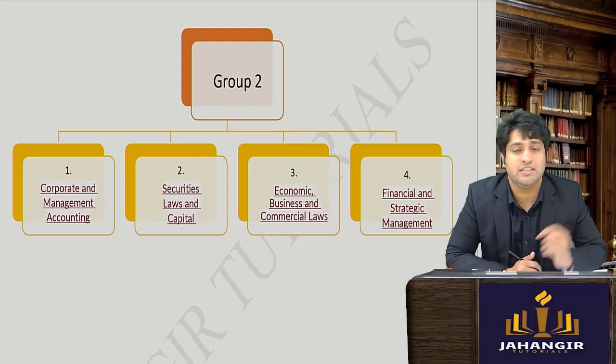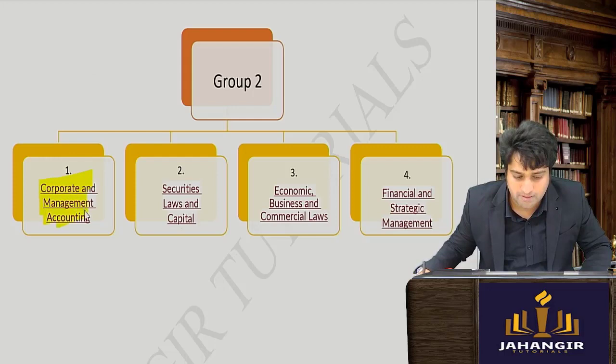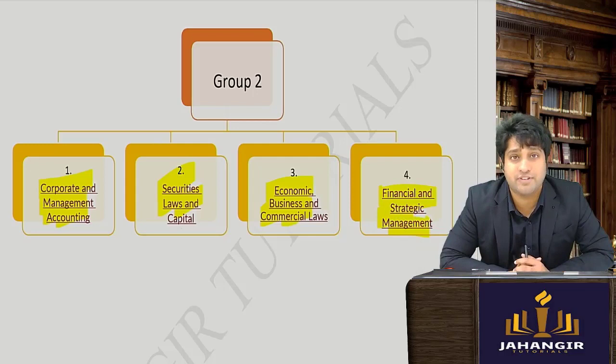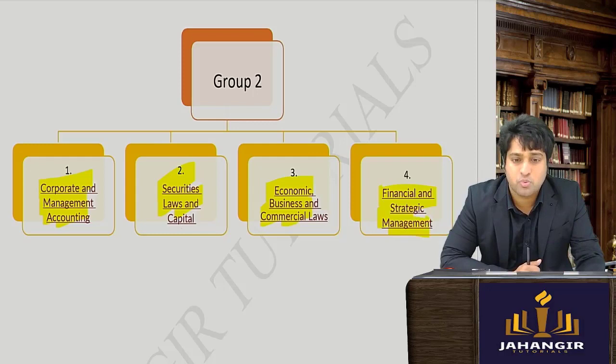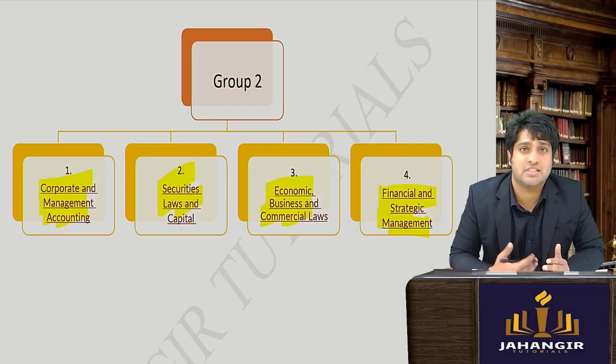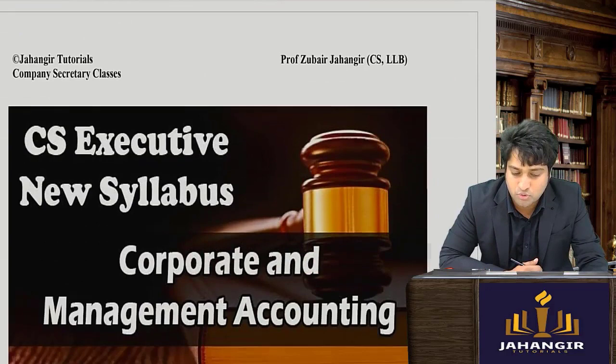In Group 2 you have 4 subjects: Corporate and Management Accounting, Securities Law, EBCL, and FTSM. Corporate, Management Accounting, and FM are MCQs, whereas the other two are theory subjects. This is a relatively easier group to score in since you have two MCQ papers, and it is very scoring if you perform well in the MCQs.